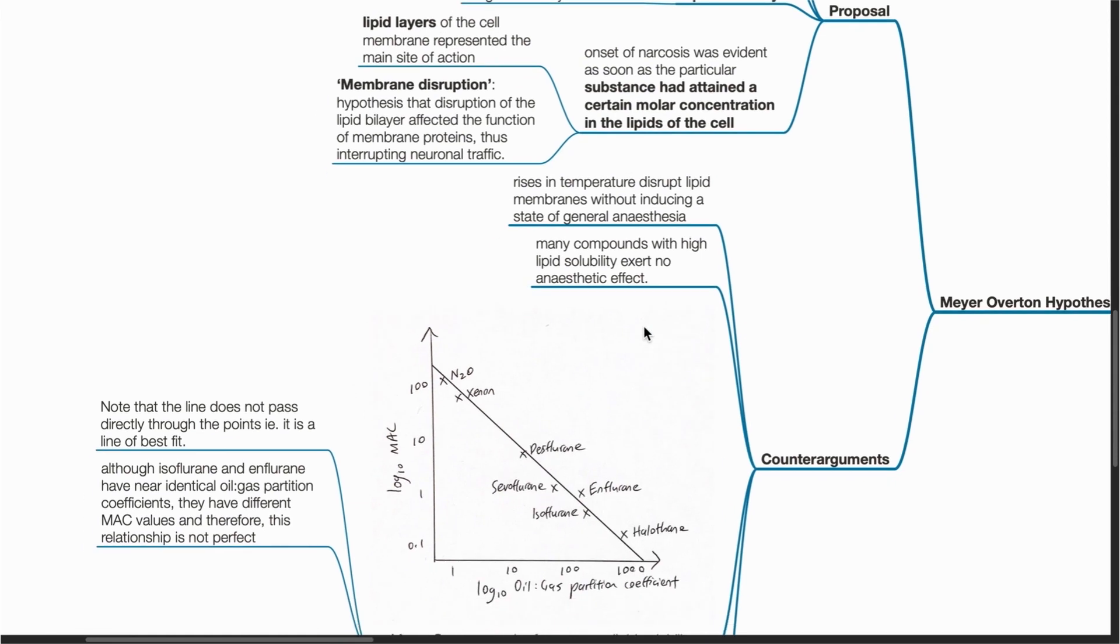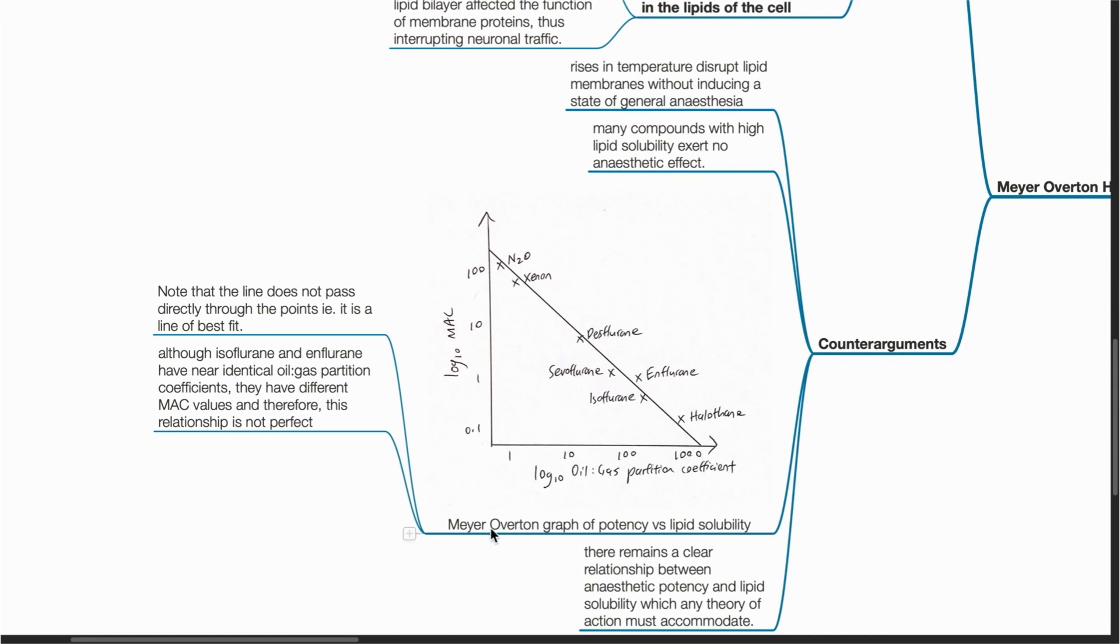This is the Meyer-Overtone graph of potency versus lipid solubility. The x-axis is log10 oil-gas partition coefficient. The y-axis shows the log10 MAC. Note that this is not a perfect relationship. Although isoflurane and enflurane have nearly identical oil-gas partition coefficients, they have different MAC values. This relationship is not perfect.